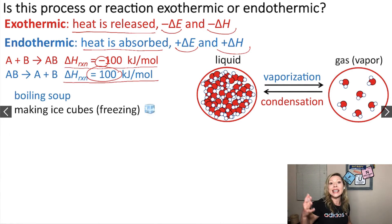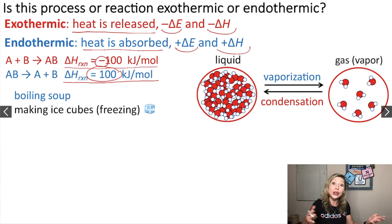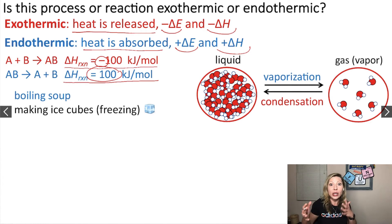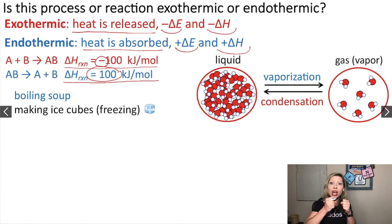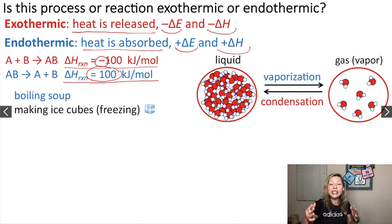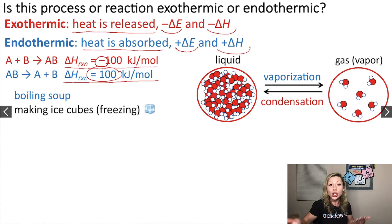How about making ice cubes or freezing — is it an endothermic or exothermic process? Generally, if you compare a liquid with a solid, in a liquid the molecules are able to pass each other, but in a solid they have stronger forces with each other. They are kind of in one spot and they are just vibrating. So this means that when we are making ice cubes or freezing, we are going to have an exothermic process.